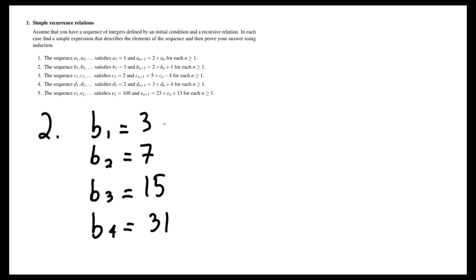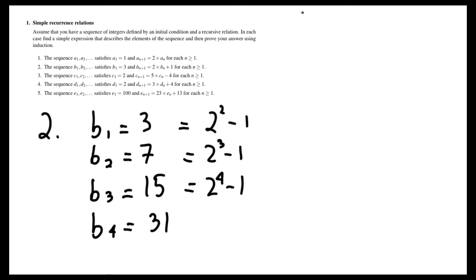And if we add 1 to all of these values, we would get 4, 8, 16, 32, which are pretty easy to recognize as powers of 2. So we can write this as 2 squared minus 1, 2 cubed minus 1, 2 to the 4 minus 1, and so on. Which gives us the hypothesis that in general, bₙ is equal to 2 to the n plus 1 minus 1.